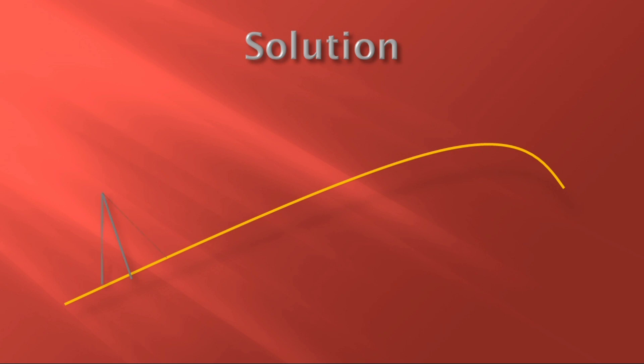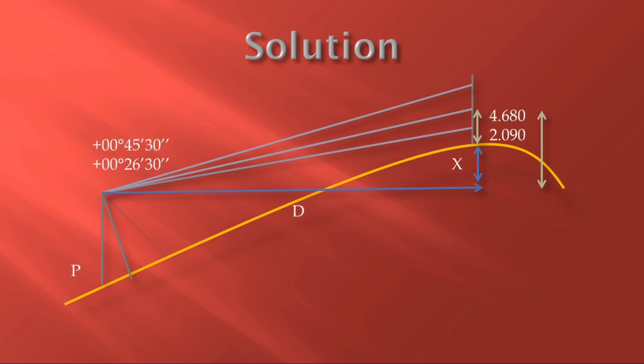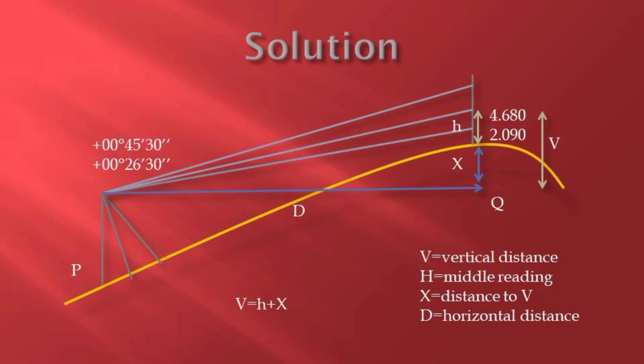Let's go directly to the solution. I illustrated that data there from P to Q where our staff was held. We had our middle readings. There we have V vertical distance, H that is the mid reading, X distance, that is the distance to V, the additional distance. Then we have D the horizontal distance. We have been told to calculate the length PQ, that is the horizontal distance D.